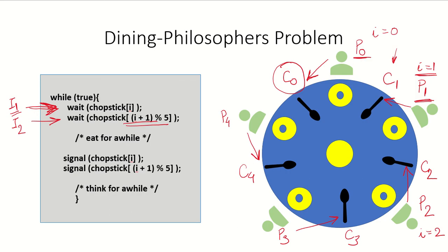This is a deadlock condition. Each philosopher holds some resource and is waiting for some other resource which is held by some other philosopher. Because of the preemption of processes and the way these instructions are being executed, this may result in a deadlock situation.